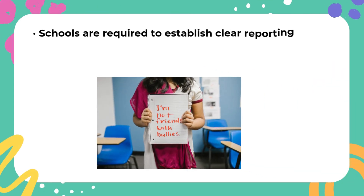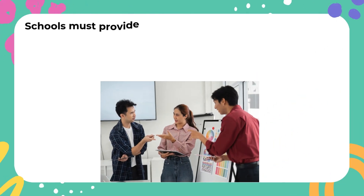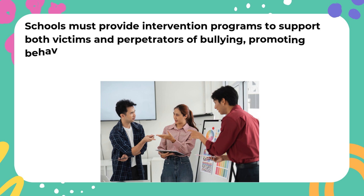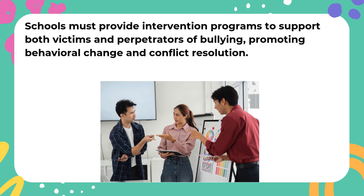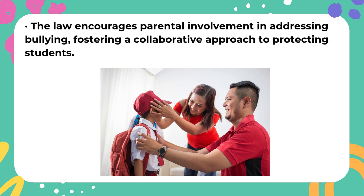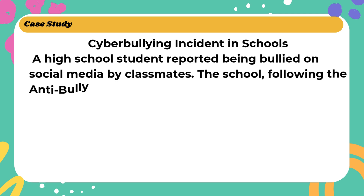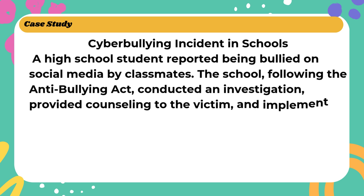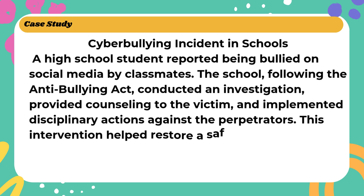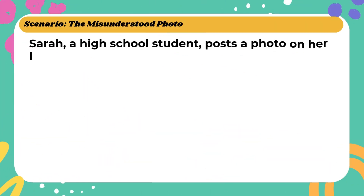Protection and Regulation: Schools are required to establish clear reporting mechanisms for bullying incidents, ensuring that victims can report incidents safely. Schools must provide intervention programs to support both victims and perpetrators of bullying, promoting behavioral change and conflict resolution. The law encourages parental involvement in addressing bullying, fostering a collaborative approach to protecting students. Case Study — Cyberbullying Incident in Schools: A high school student reported being bullied on social media by classmates. The school, following the Anti-Bullying Act, conducted an investigation, provided counseling to the victim, and implemented disciplinary actions against the perpetrators, helping restore a safe learning environment.